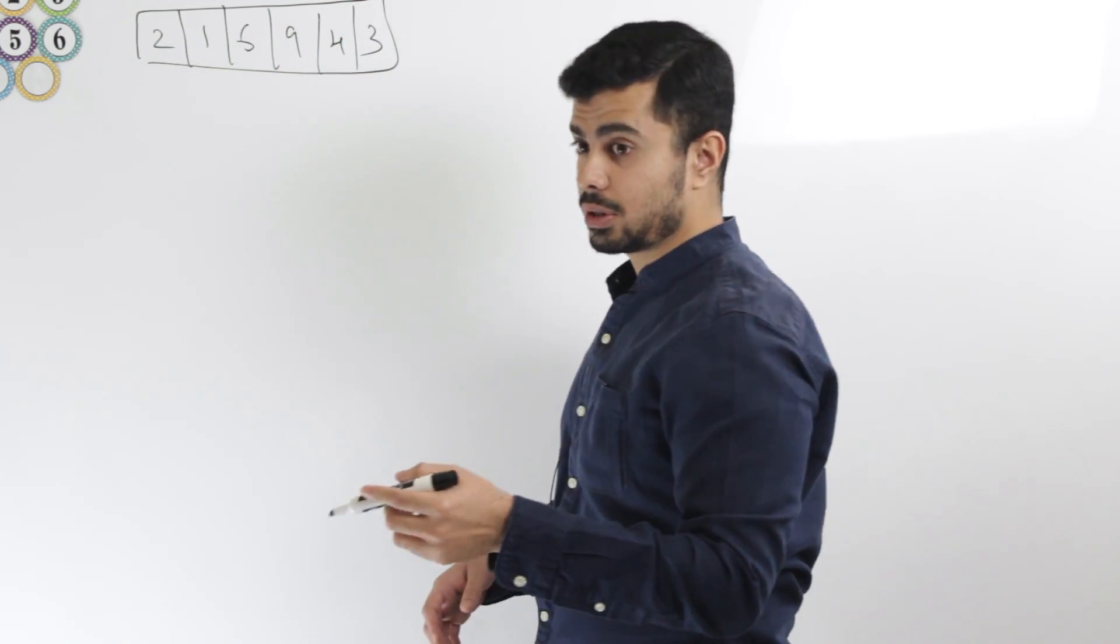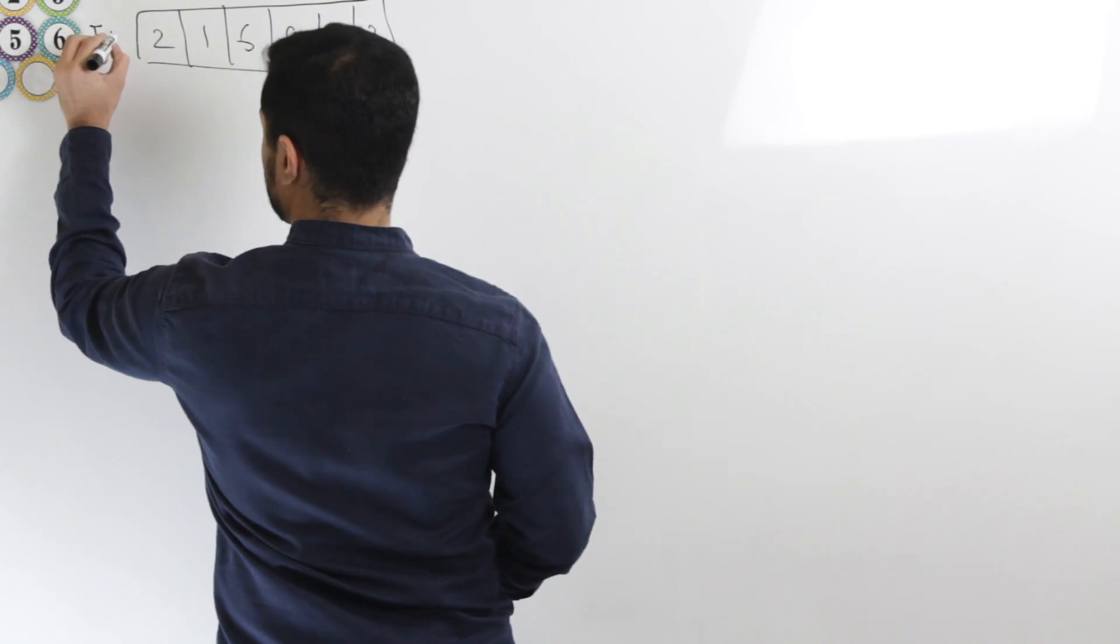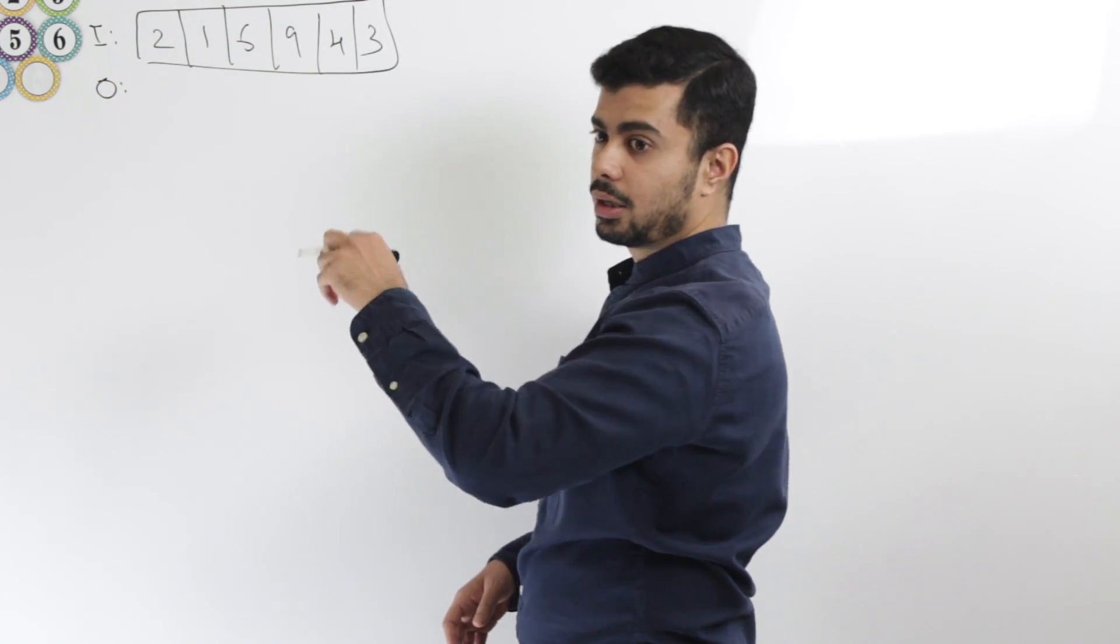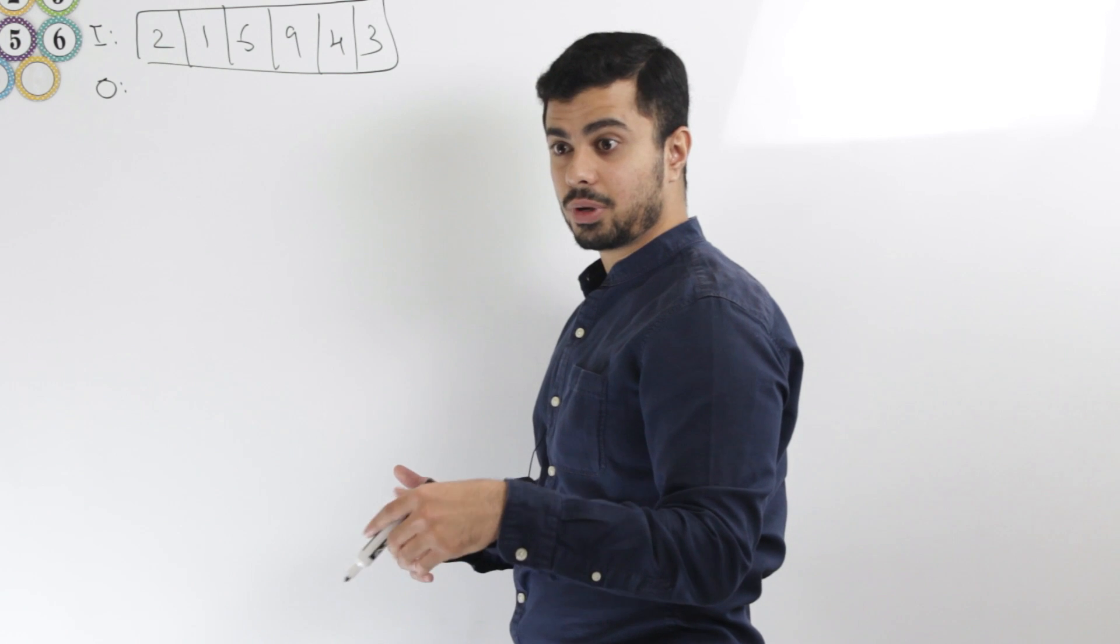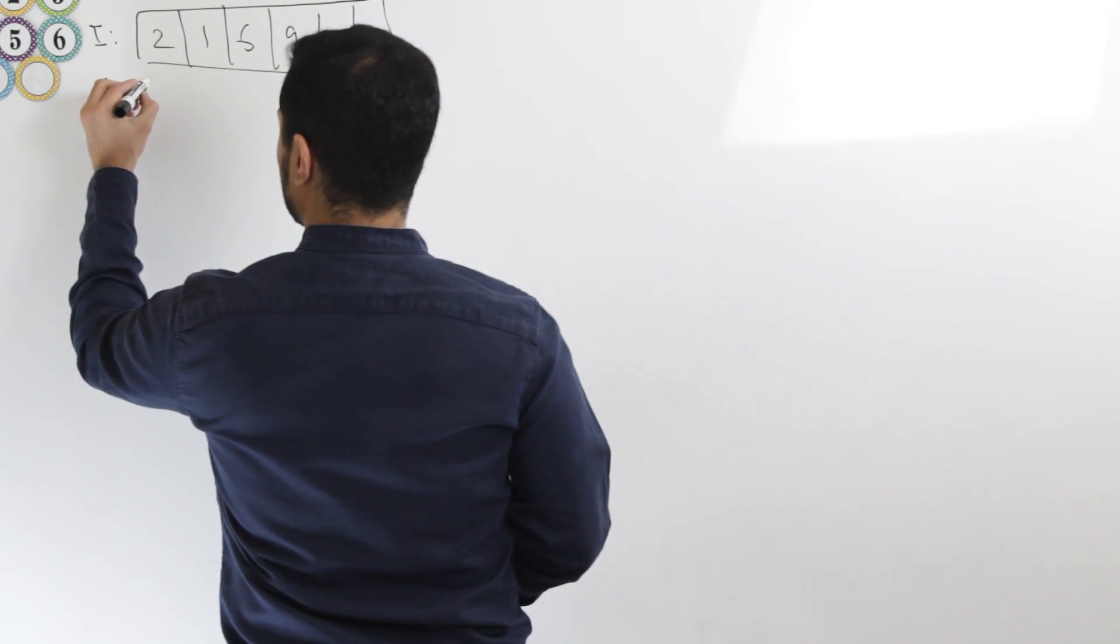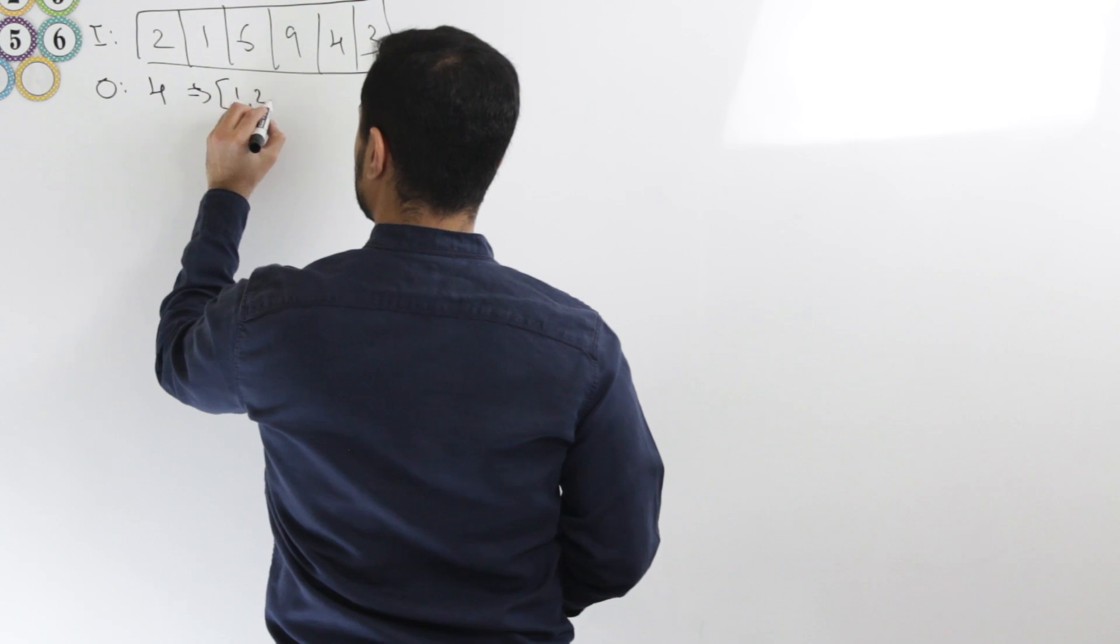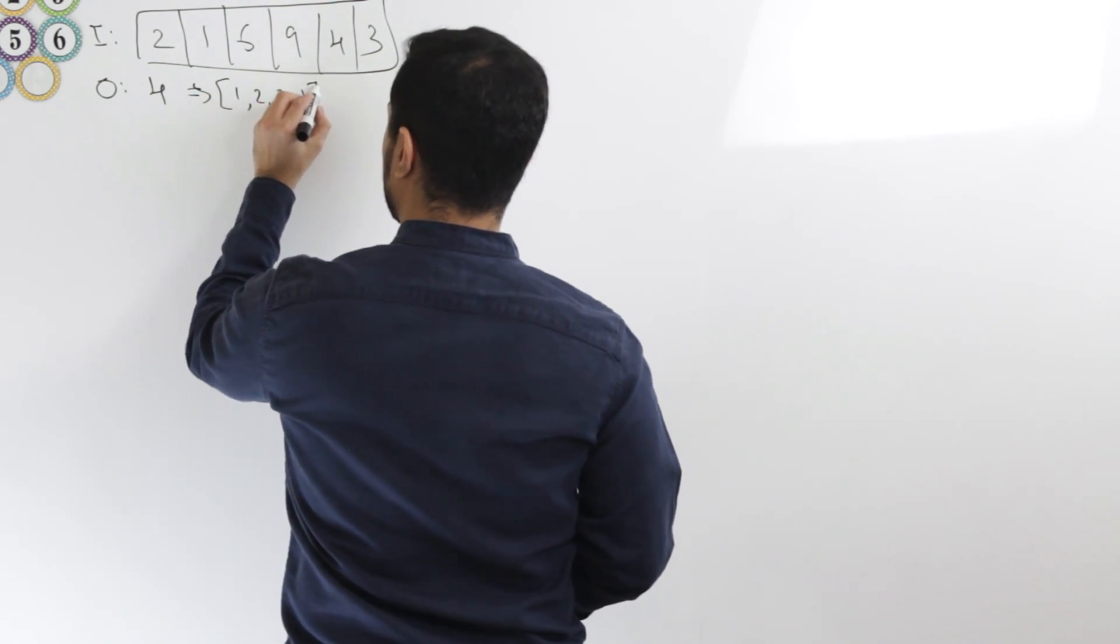So in this case, the longest subsequence, if this is the input, then the longest subsequence would be one, two, three, four, and the length which I'll be outputting would be four, right? So output would be four because it is one, two, three, and four.